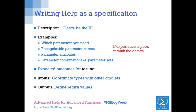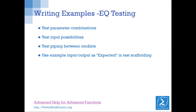I'm using advanced help for advanced functions — and 'advanced' in two ways: it's advanced in terms of PowerShell, it's advanced functions, but it's also writing help in advance. Writing your examples is really testing, because you test parameter combinations and input possibilities, you test piping, and you get a sense of where you need to pipe. Then you can use your example input and output as expected values in Pester.